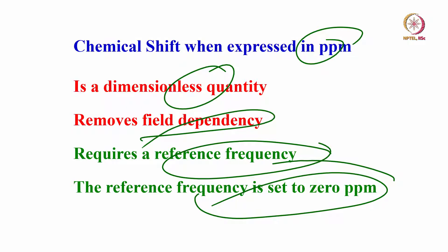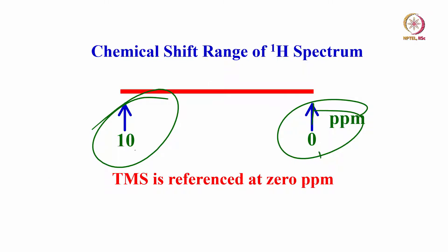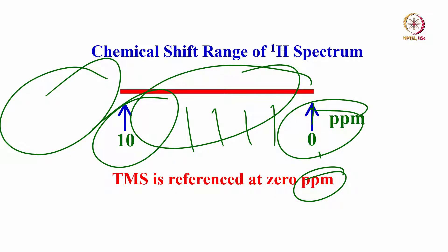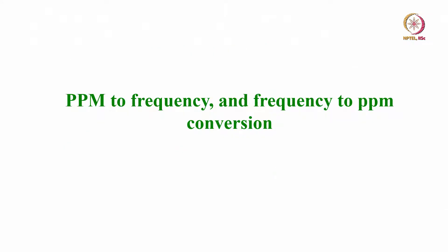Chemical shift expressed in ppm removes field dependency — we discussed this in depth in the last course. The chemical shift range of proton is generally 0 to 10 ppm: 0 is for the reference tetramethylsilane, and within 10 ppm you are going to get all the peaks. By and large, the majority of samples give peaks only between 0 to 10 ppm with TMS as reference, though special examples can go to 15 or 20 ppm or beyond.